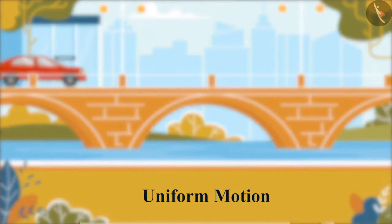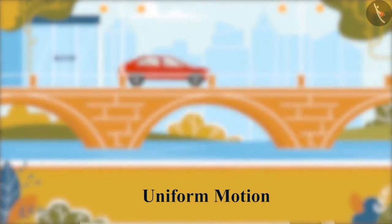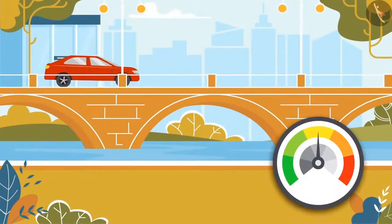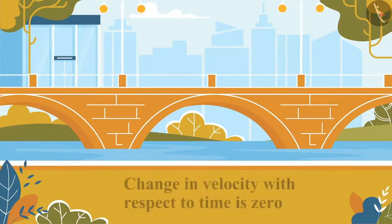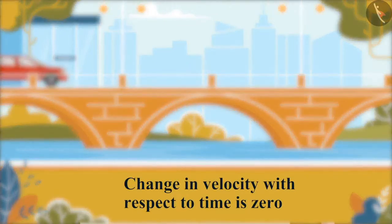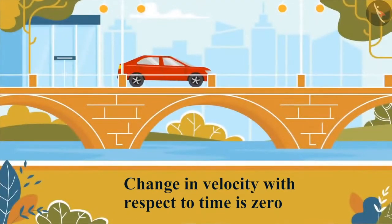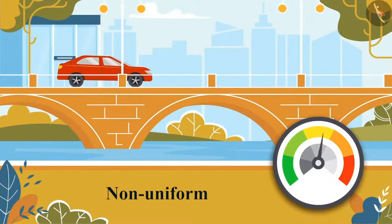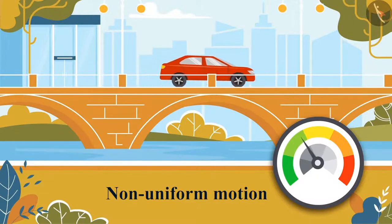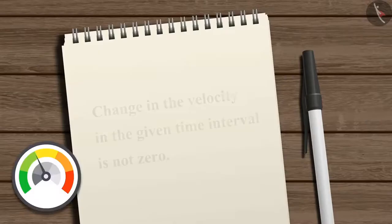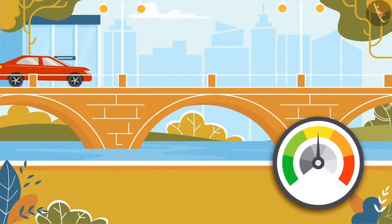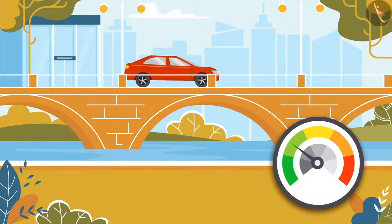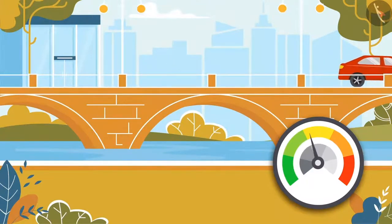Suppose a car is in uniform motion moving on a straight road. Its velocity doesn't vary with time and hence remains constant. The change in velocity with respect to time is zero. Now, consider if the motion of the car is non-uniform and its velocity varies with time. Thus, the change in velocity in the given time interval is not zero. To represent this rate of change of velocity, here comes another physical quantity known as acceleration.